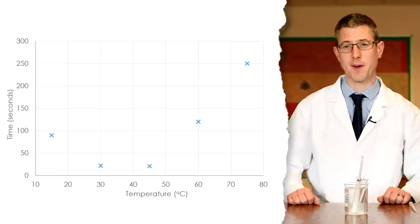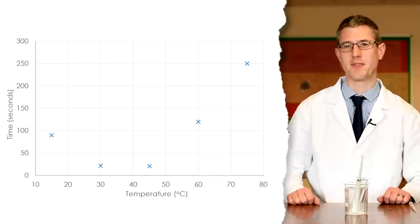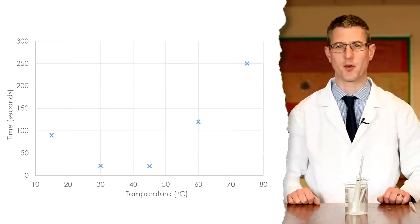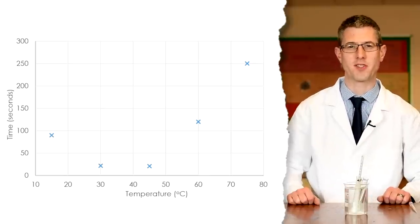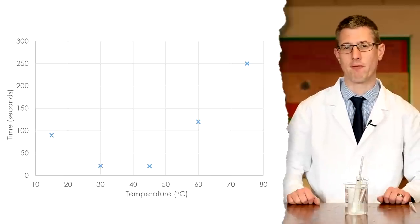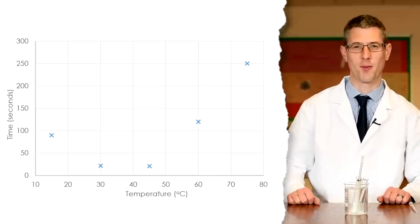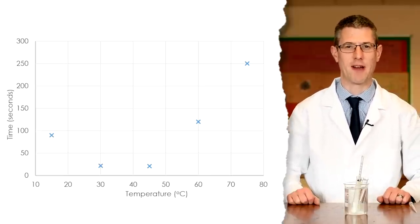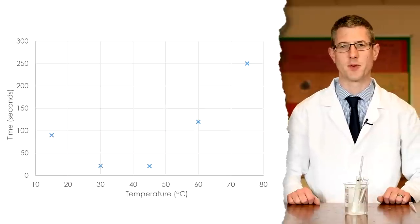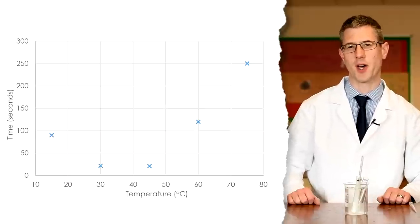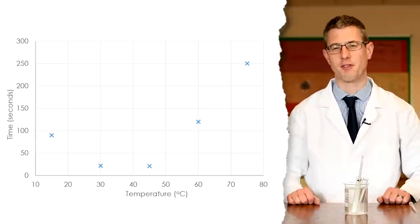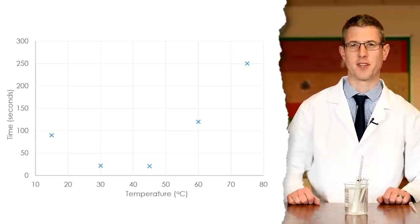Because this experiment is actually using enzymes, we're going to see very similar results to the required practical we've done previously looking at rates of enzymes. Lipase has an optimum temperature of around 37 degrees Celsius, so we should see the lowest time readings somewhere between 30 and 45 degrees Celsius.